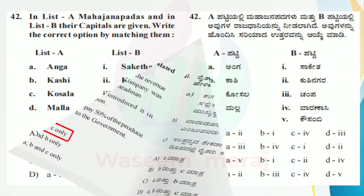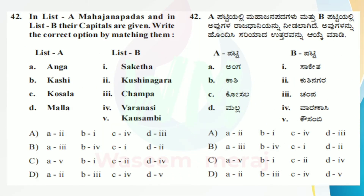Now let's go to question number 42. In List A, Mahajanapadas and in List B their capitals are given. Write the correct option by matching them. List A: A — Anga, B — Kashi, C — Kosala, D — Malla. List B: first — Saketa, second — Kushinagara, third — Champa, fourth — Varanasi, fifth — Kausambi. Options: Option A: A to second, B to first, C to fourth, D to third. Option B: A to third, B to fourth, C to first, D to second. Option C: A to fifth, B to first, C to second, D to fourth.